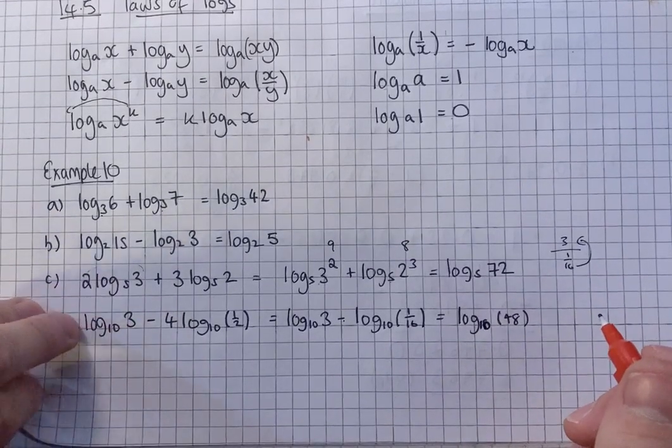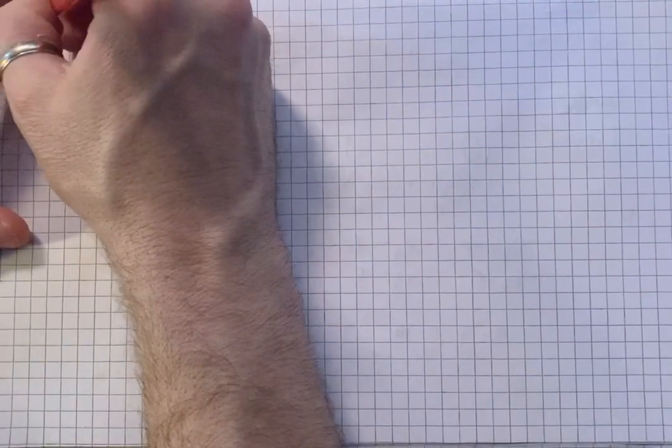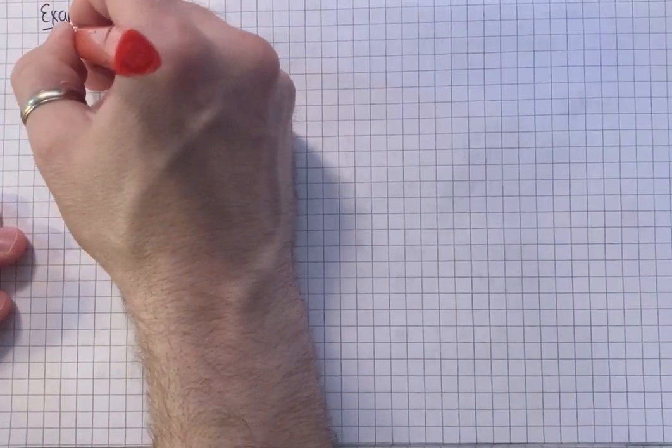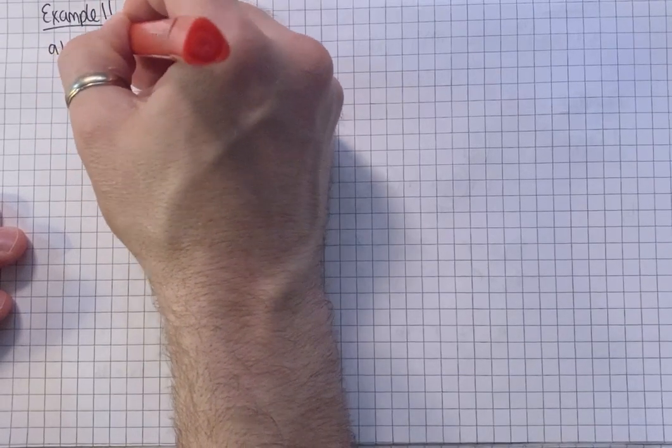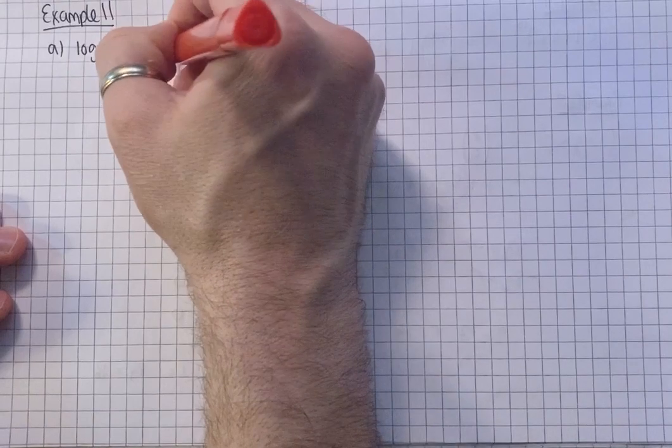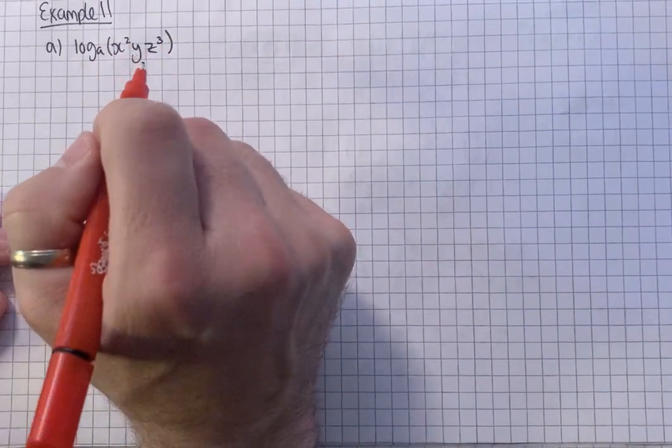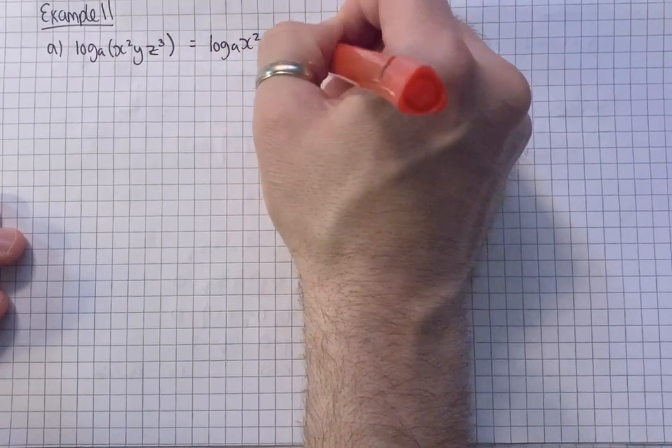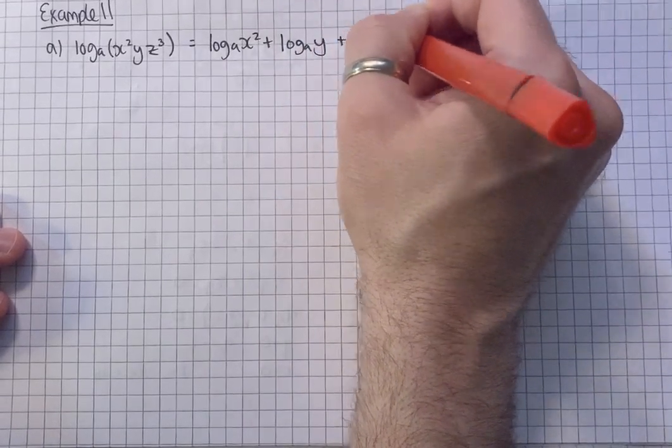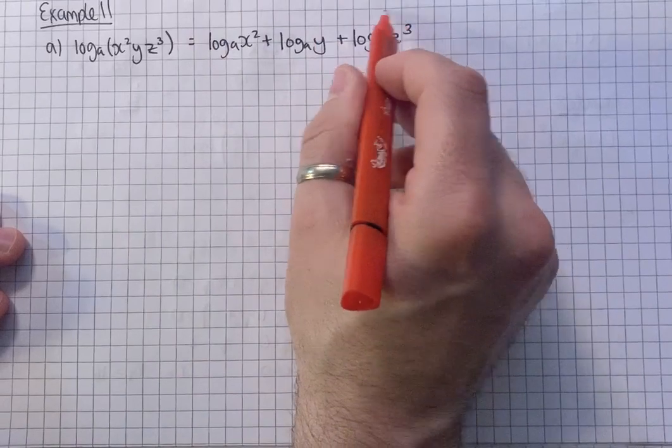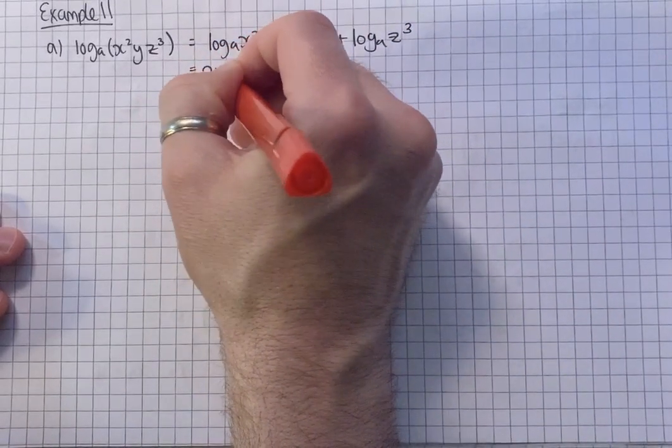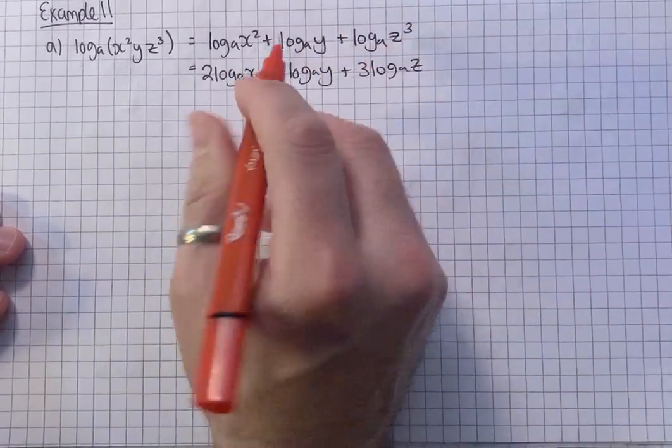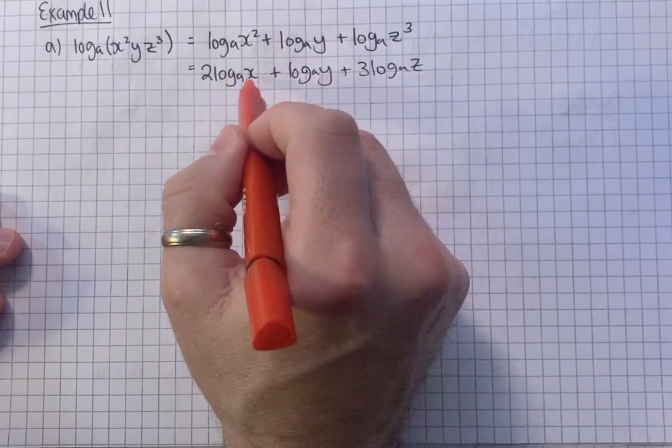Okay, example 11 then. This is the opposite. This time we've got a combined log, and we have to split it up into its components. Well, these have all been multiplied, so we can split them up like so, using the multiplication rule. And then we can use the power rule just to bring these in front of the logs. Okay. Because the question said to rewrite in terms of log to the base a of x, log to the base a.